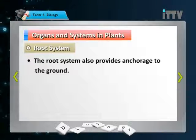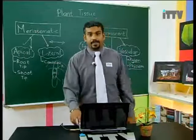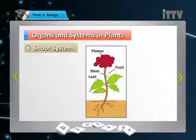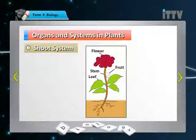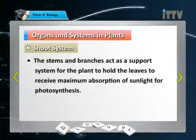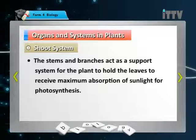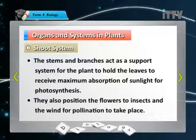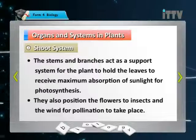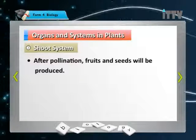The root system also provides anchorage to the ground, gripping the soil to hold the plant steady. In the shoot system you can find leaves, stems, fruit, and flowers. The stems and branches act as a support system to hold leaves upright for maximum sunlight absorption for photosynthesis, and position flowers for pollination by insects and wind — after which fruits and seeds are produced.